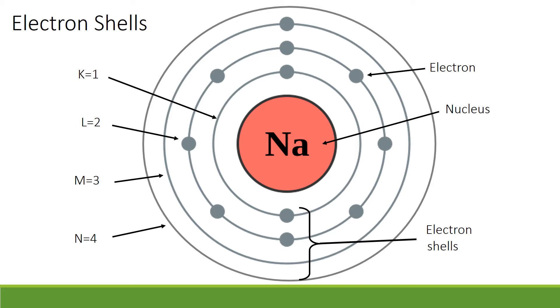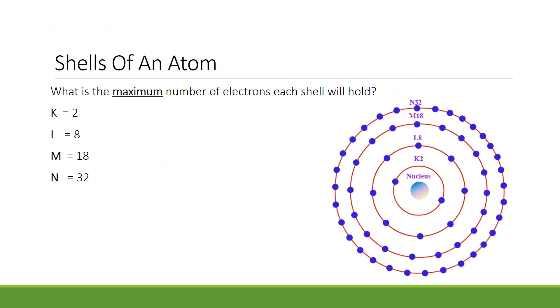Electrons are located in these shells. The innermost electron shell is the K shell, and it can hold a maximum number of 2 electrons. The second shell, or the L shell, holds a maximum number of 8 electrons. The third shell, or the M shell, holds a maximum of 18 electrons, and the fourth shell, or the N shell, holds a maximum of 32 electrons.